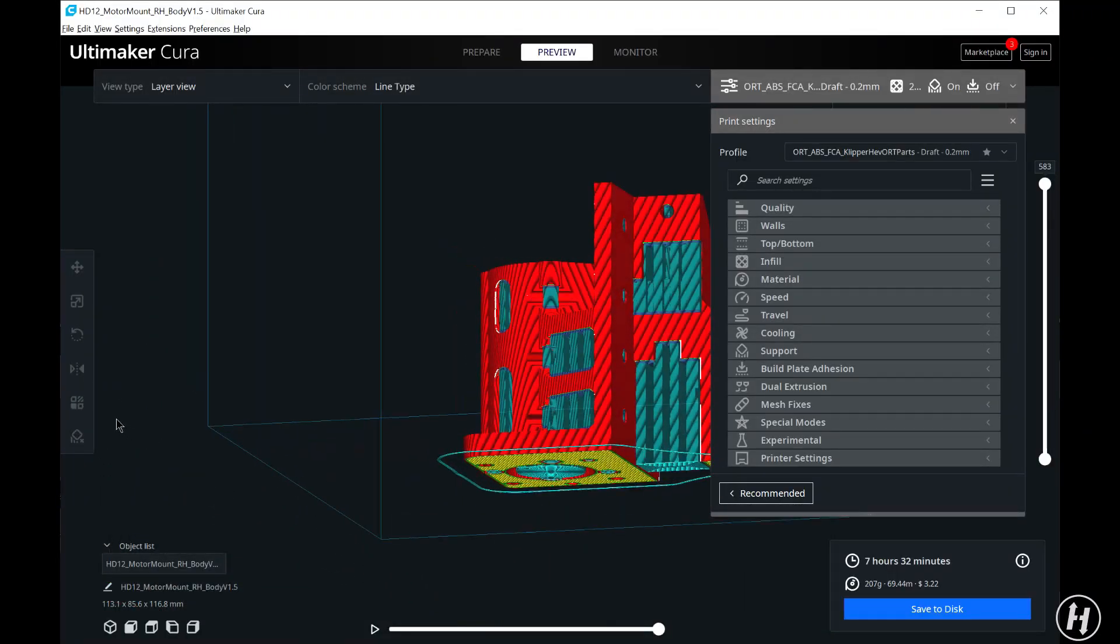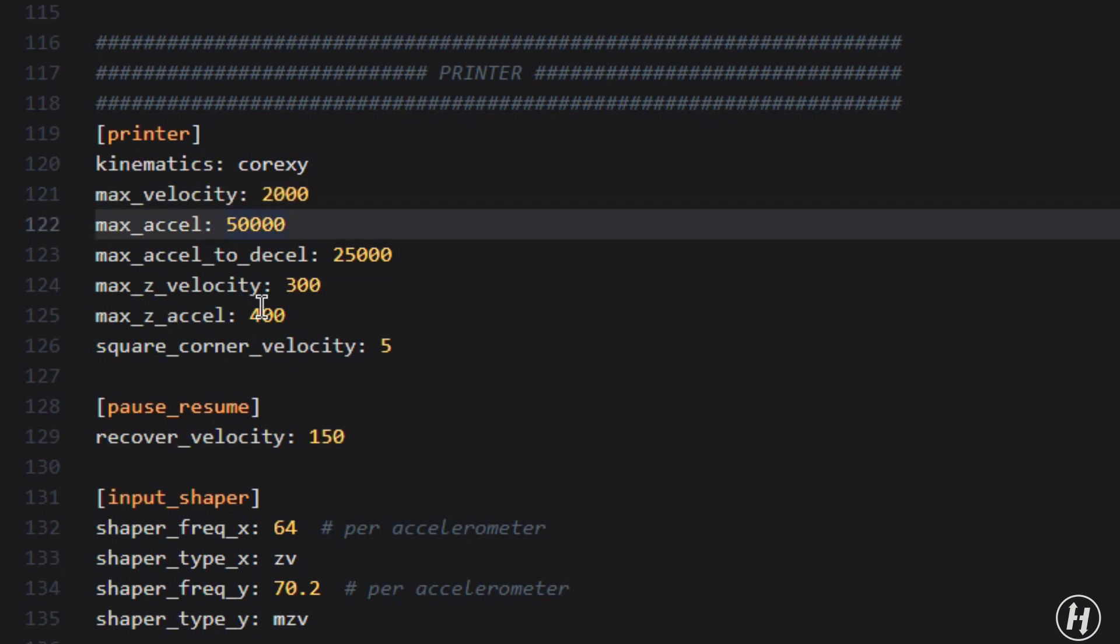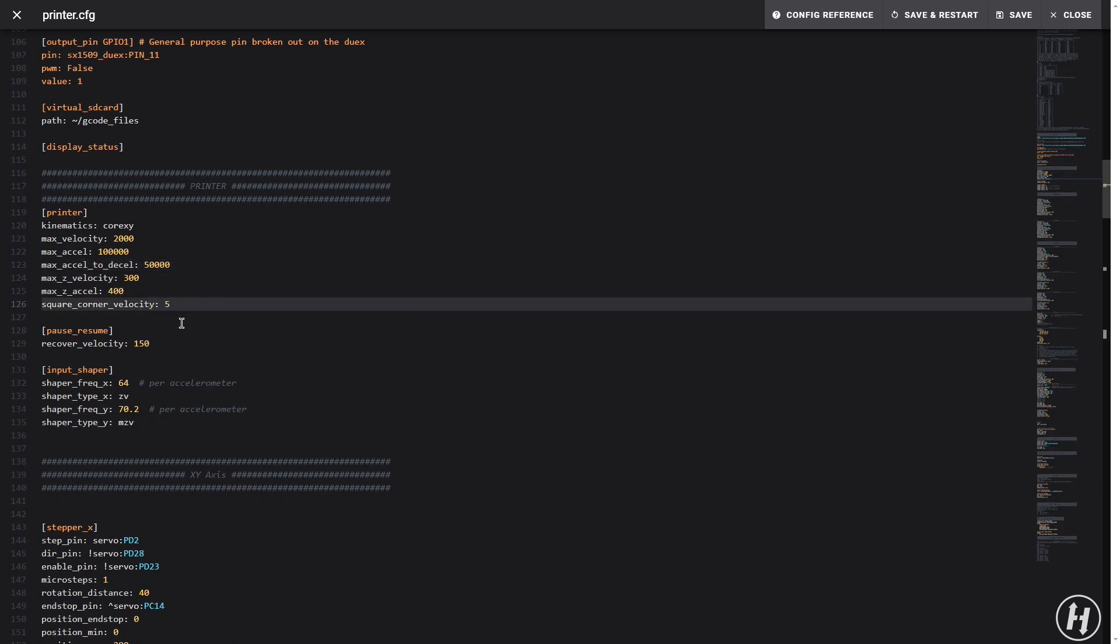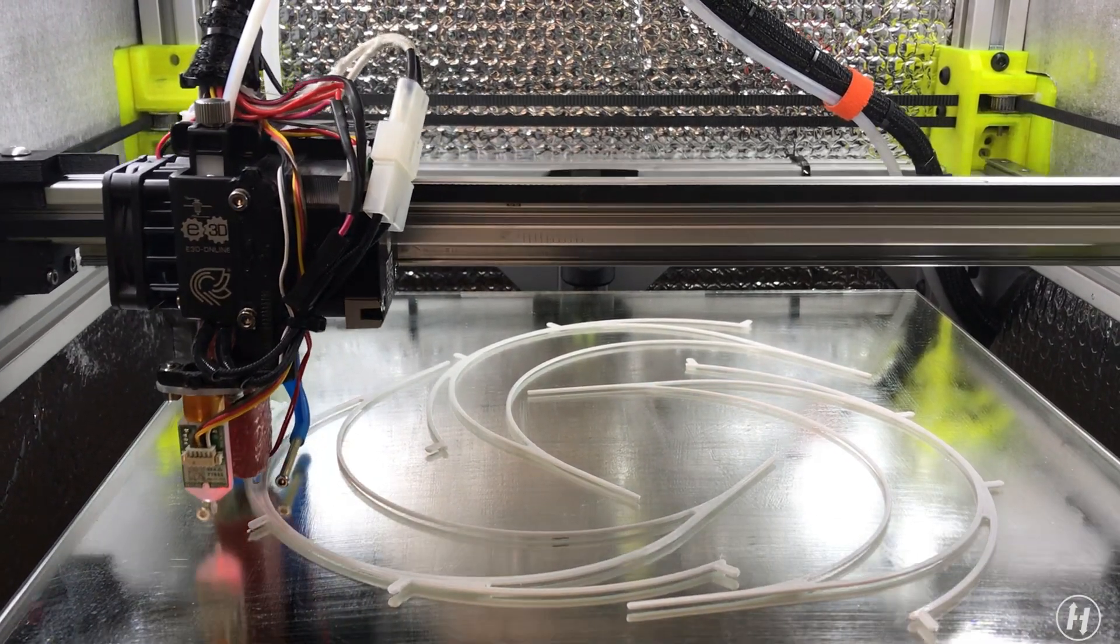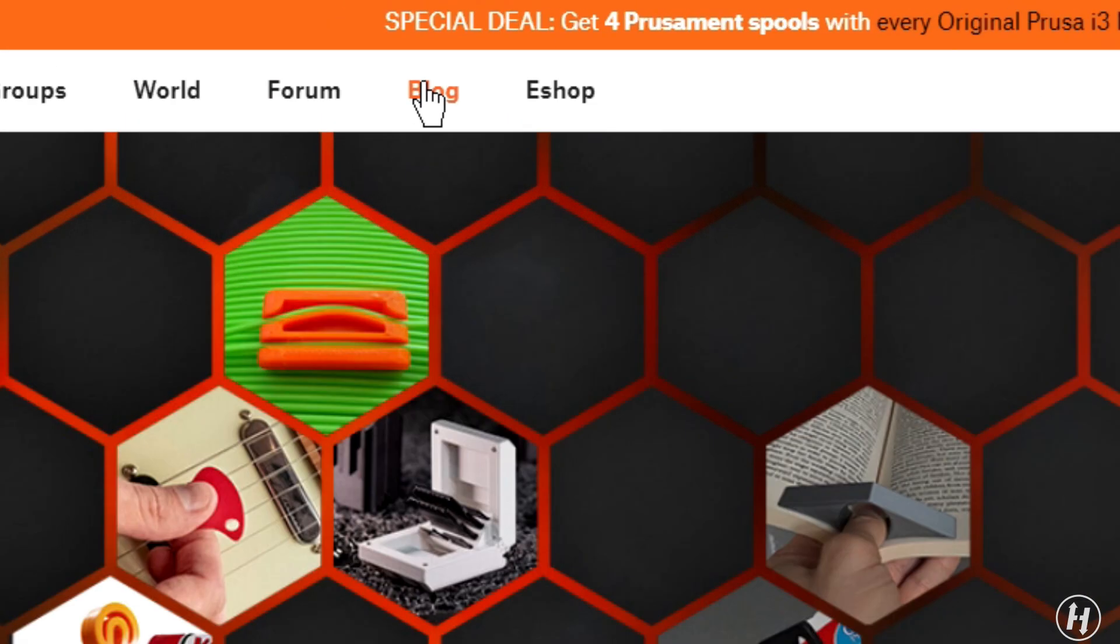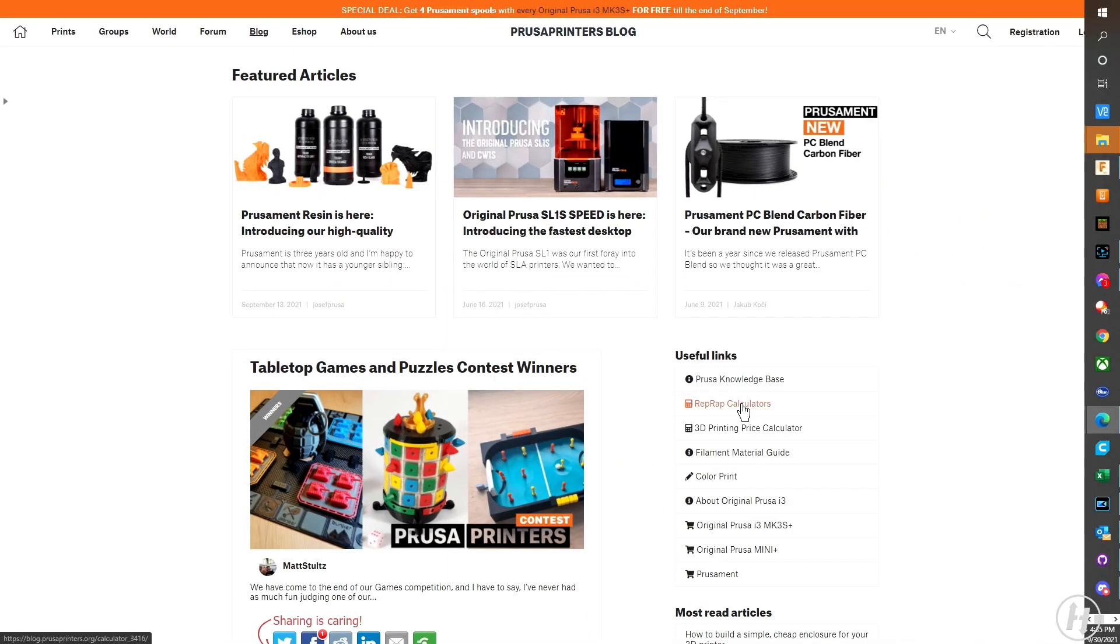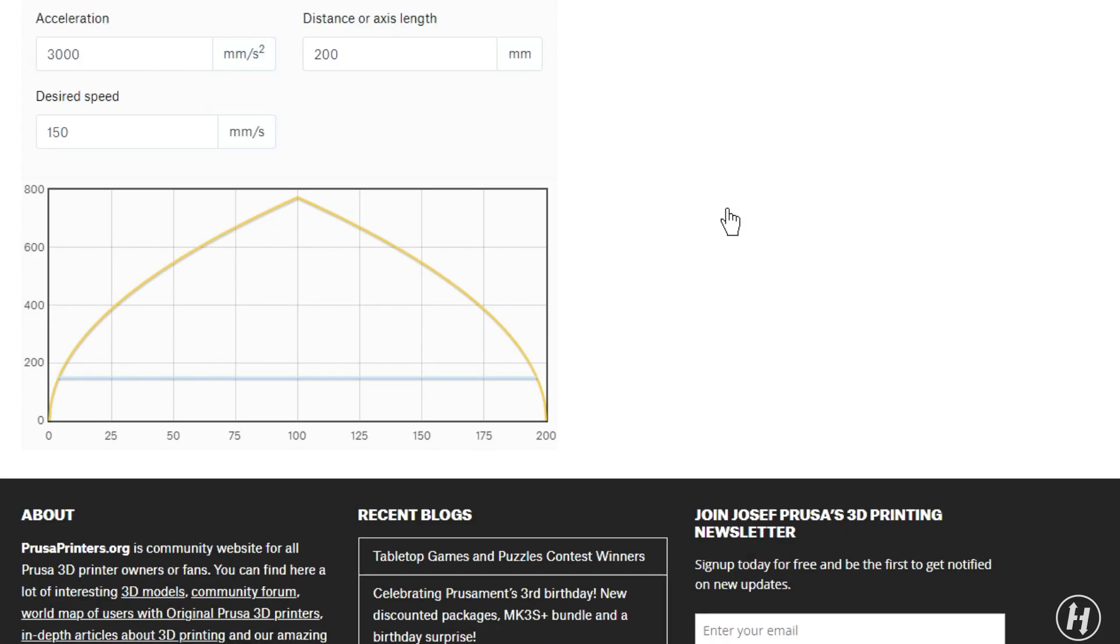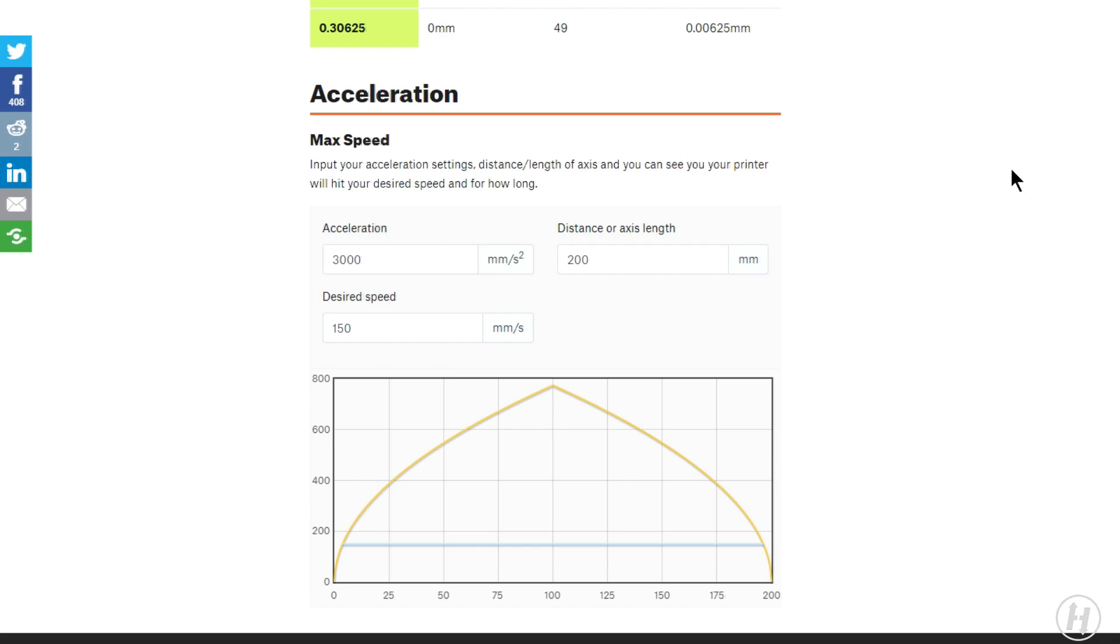Although we set the slicer and the printer's firmware for certain speed values, the true speed obtained is affected by the amount of acceleration we apply to the start and stop of each move. There's a neat tool on Prusa's website that will tell you the true speed obtained at every stage of a travel or print move.